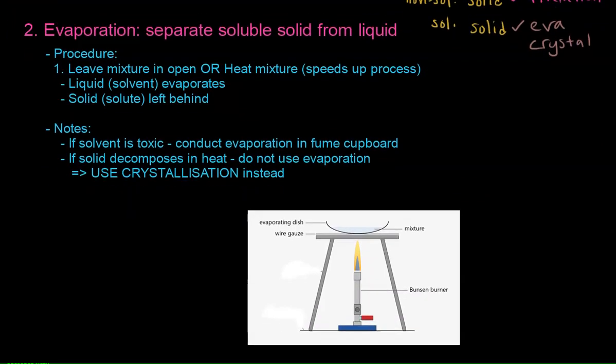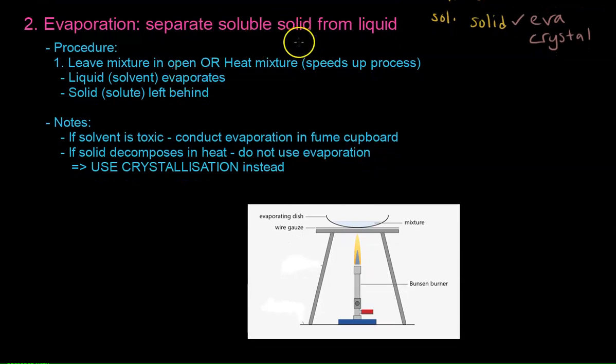So for evaporation first is to separate soluble solid from its liquid. Imagine now you have it in a beaker. This liquid right here is made up of water and for example salt. Salt water you cannot just physically separate them with filtration. You have to use evaporation for example. So how is it being done? Basically you leave the mixture in the open or you can heat it up which speeds up the process. When it heats up the water evaporates and what's left behind is the salt that you want, for example in this case the salt NaCl. The chloride salt being left behind after water evaporates.